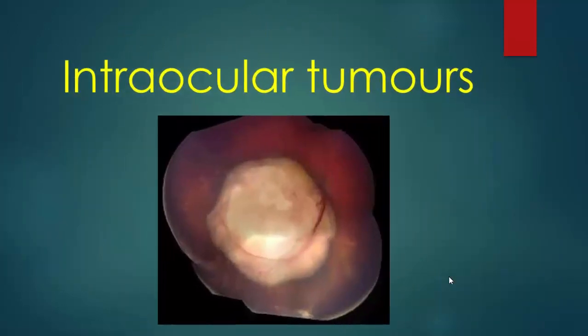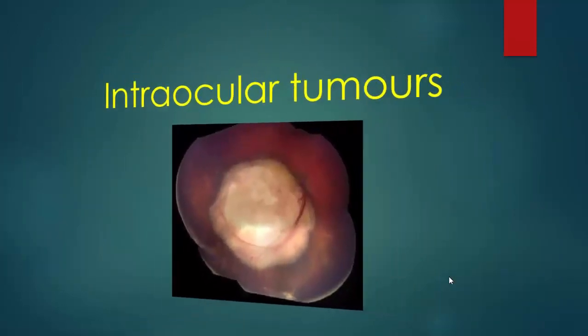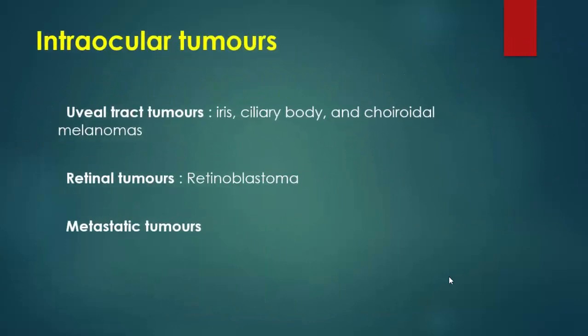Intraocular tumors can include uveal tumors, which arise from the iris, ciliary body, and choroid — as melanoma. Retinal tumors include retinoblastoma and metastatic tumors.